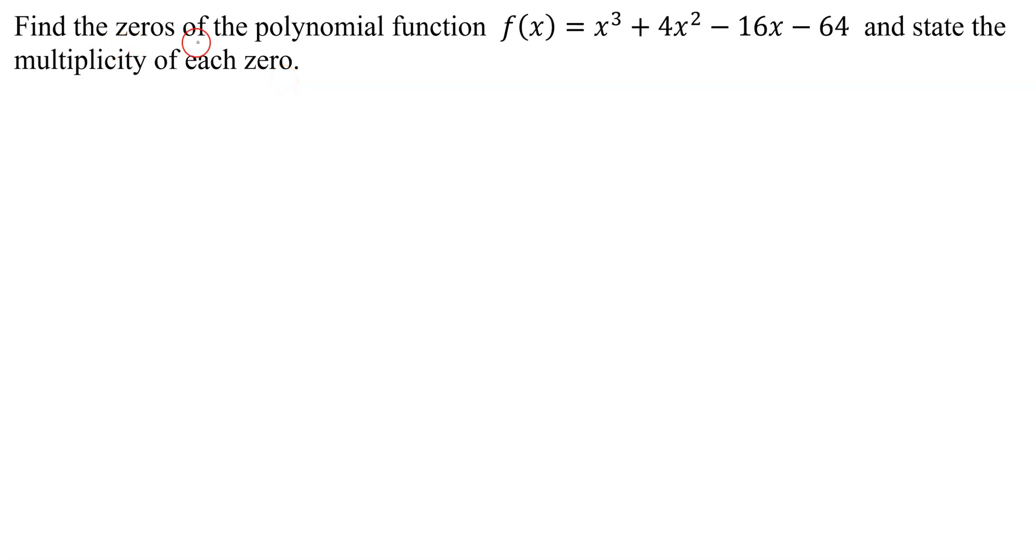How do we find the zeros of any function? We set f(x) equal to zero. So I'm going to set this whole expression here equal to zero. I'm going to have x³ + 4x² - 16x - 64, and I'm just going to set it equal to zero. And this is the equation we're going to have to solve.